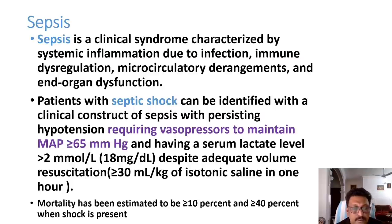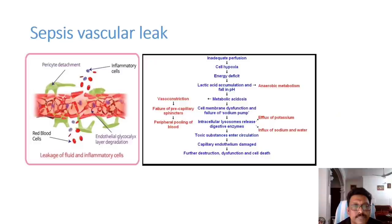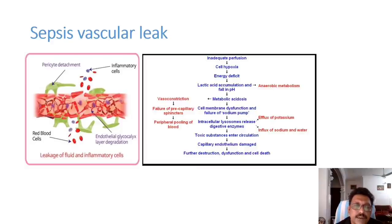The mortality of septic shock is more than 40 percent if not treated properly, so it is very important to make the diagnosis early. Whenever there is an infection and the patient progresses to sepsis and septic shock, one important mechanism produces all the complications — this is vascular leak.